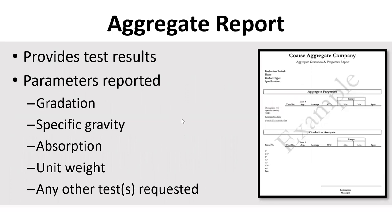Let's talk about the different reports. The aggregate report provides test results including gradation, specific gravity, absorption, and unit weight. Sometimes the gradations are even graphed. A lot of times the report may only have the gradation on it — people report these things a little differently. If you ask for additional information, they'll usually provide it, but they may not run every test every day.